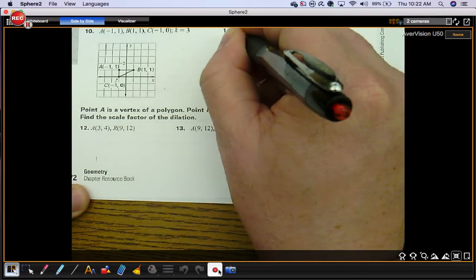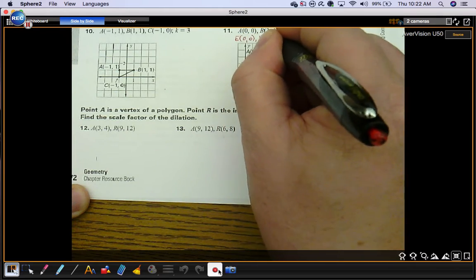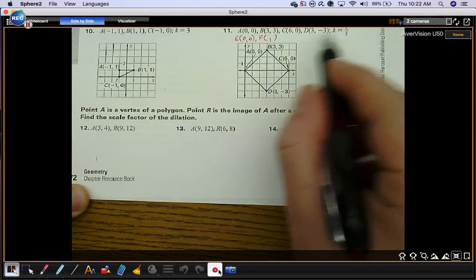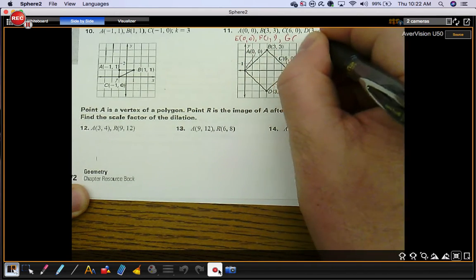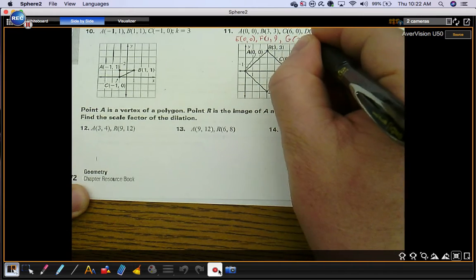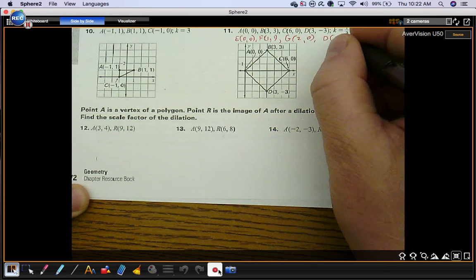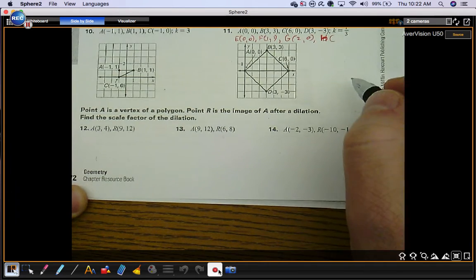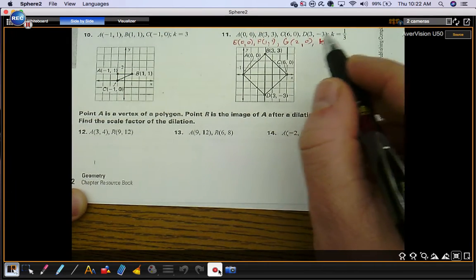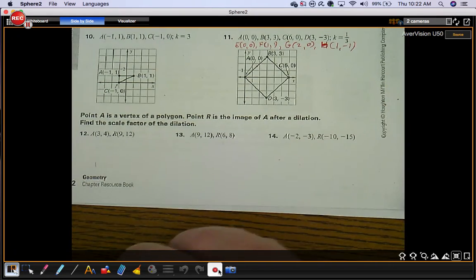I guess we'll use E. If you multiply 0 by anything, you still get 0. We'll use F. If you take 1 third of 3, you get 1. We'll use G. If you take 1 third of 6, you get 2. And, now we can't use D. E, F, G. How about H? We'll call that an H instead. Sorry about that. I know it's a little messy. Take 1 third of both of these, and you get 1 and negative 1.